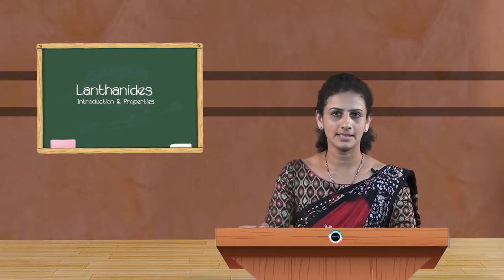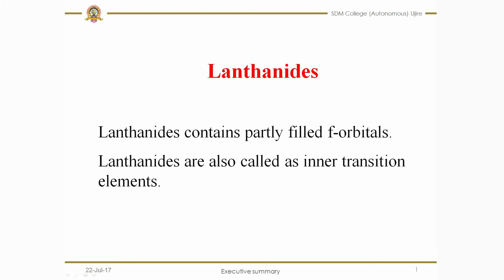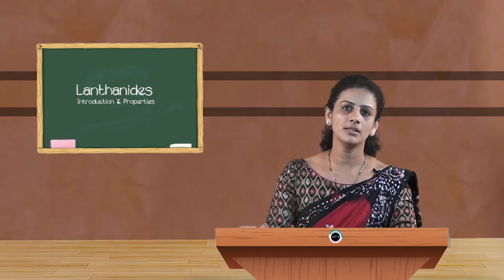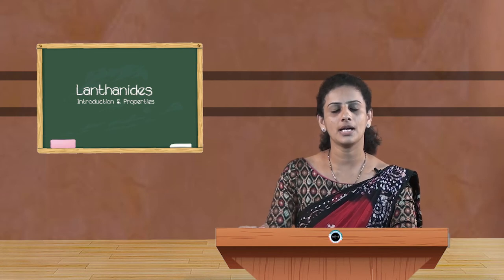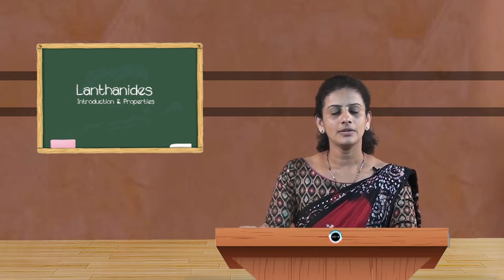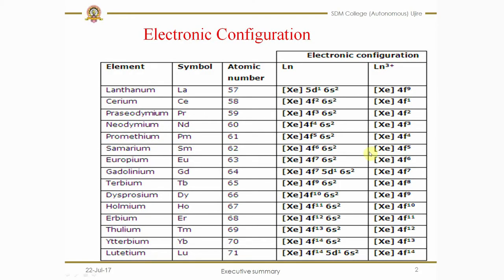Let us discuss lanthanides. The elements from lanthanum to lutetium constitute the lanthanide series. The 14 elements next to lanthanum have similar properties, so all 15 elements are called lanthanides. These lanthanides are called inner transition elements because as the atomic number increases, electrons enter into the innermost F orbitals.